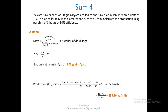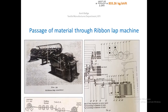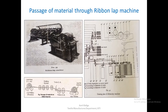Having covered all sliver lap machine problems, we now move to the ribbon lap machine. Here is the machine image, the passage of material, and the gearing diagram. An important distinction: in the ribbon lap machine, both the feed and delivery materials are laps, so we must be careful about what values we use in calculations.